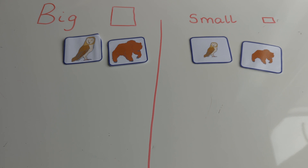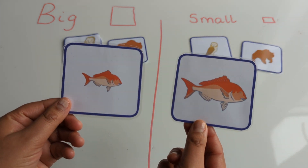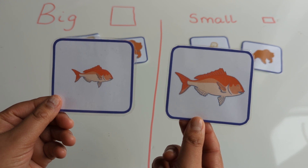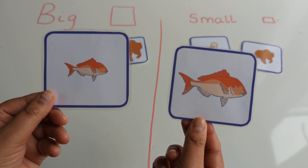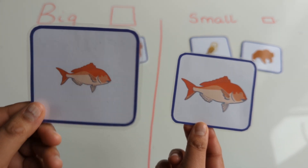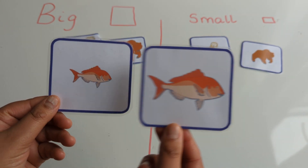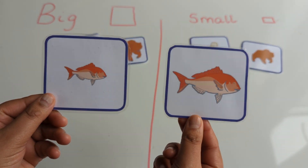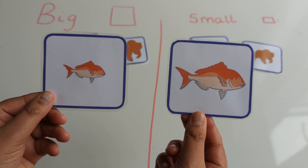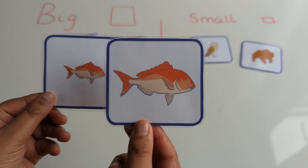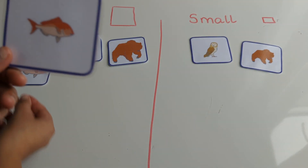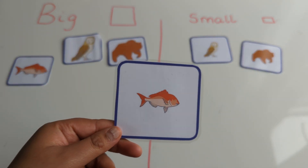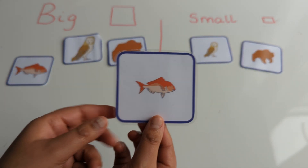Right, let's have another look. What's next? I've got two fish. Which one's bigger? Is this bigger or is this one bigger? That's right, this is the bigger fish. So let's put it on the big side and this one on the small side.